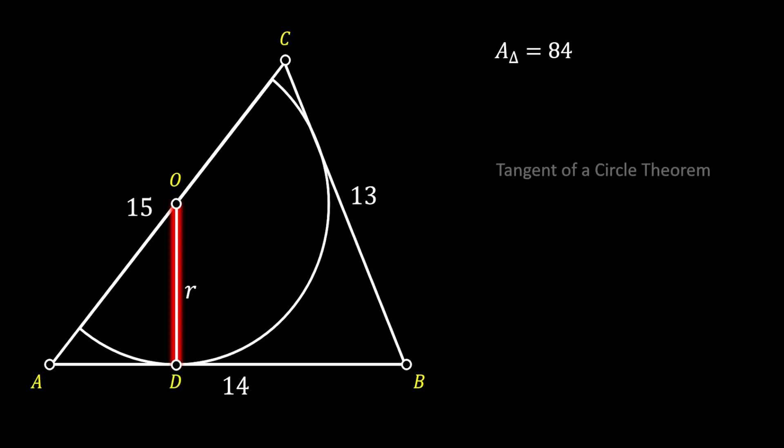Now, we will use the tangent of a circle theorem. It states that if you have a circle and the tangent to this circle and if you pull the radius to the intersection point between the tangent and the circle, the angle between the radius and the tangent will always be 90 degree angle.